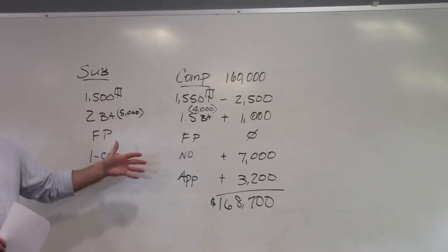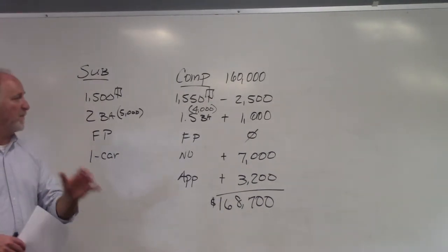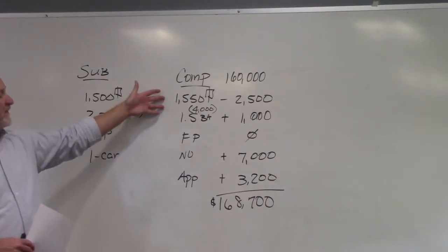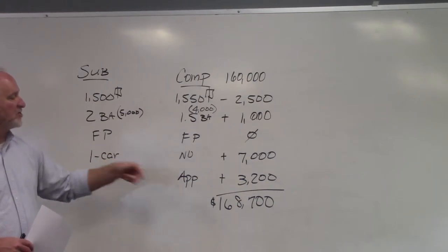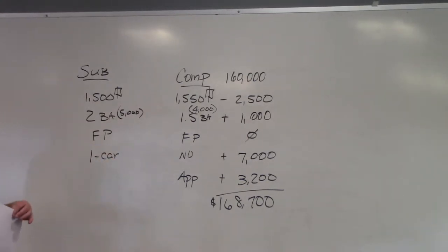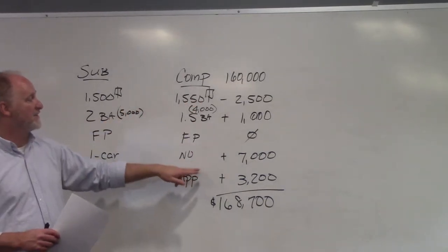In regards to the adjustments, remember you're adjusting only for the differences. I line up the comp's amenities: 1,550, bath and a half, full fireplace, no garage, and the appreciation. As I suggested in class, if you would just simply take the comps and put in your plus or minuses.